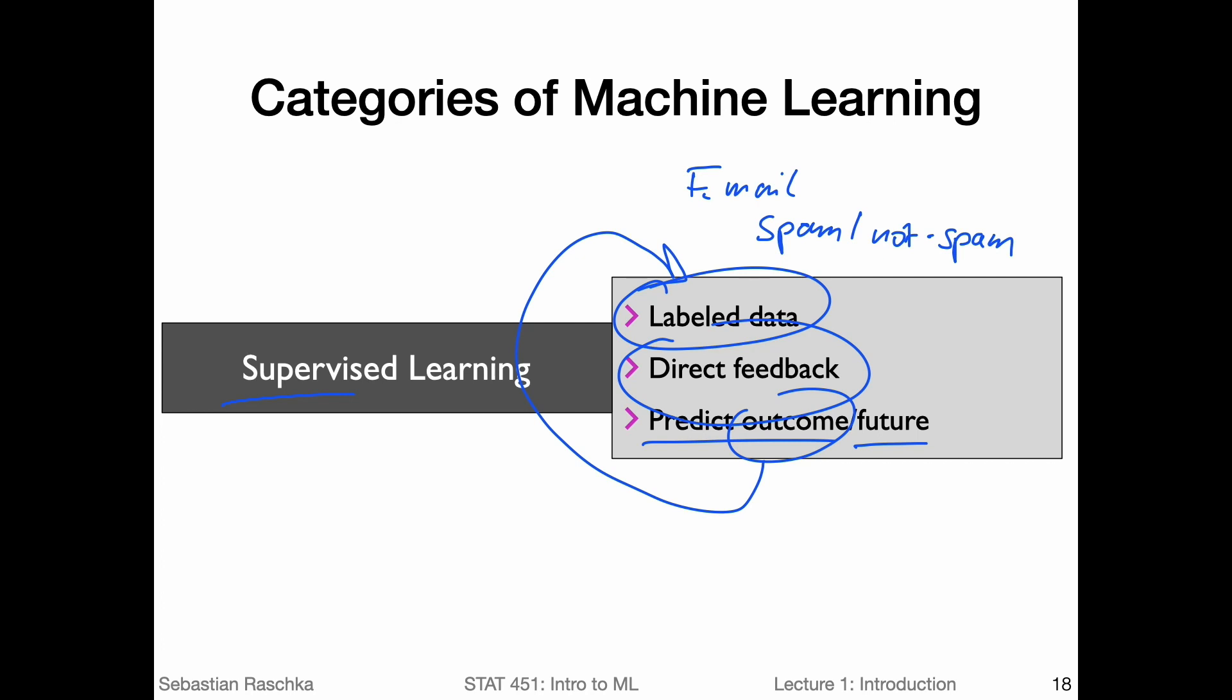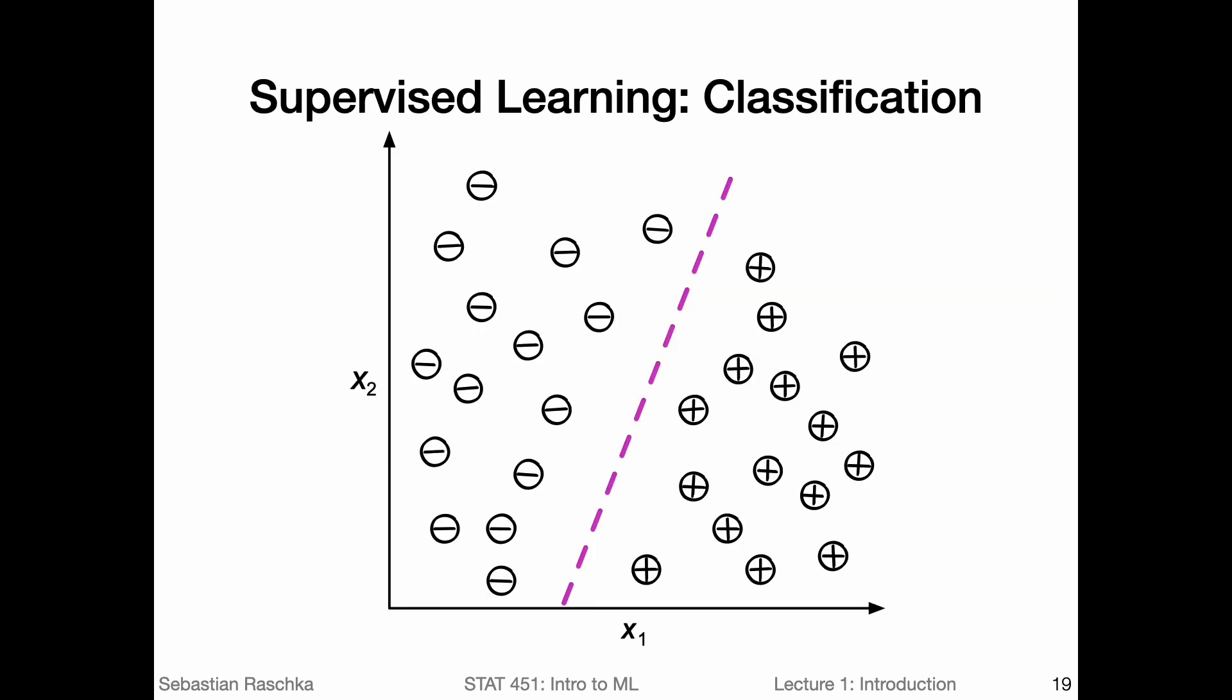So like I mentioned before, I said the term classification. So one sub-category of supervised learning is classification. That is about learning how to assign class labels spam and not spam. We have the class labels spam and not spam in email classification. In this figure here, we have two class labels, minus and plus. And the goal is to distinguish between minuses and pluses given two types of information, x one and x two.